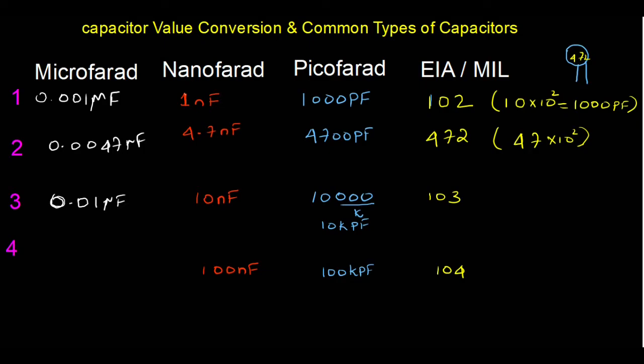100 kpF in nanofarad: removing 'k' (÷1000) gives 100 nanofarad. Then dividing 100 nanofarad by 1000 gives 0.1 microfarad. I hope all of you understood the conversions between microfarad, nanofarad, picofarad and the mil/EIA code.